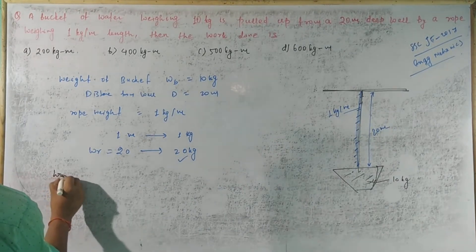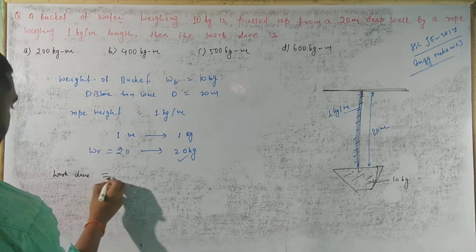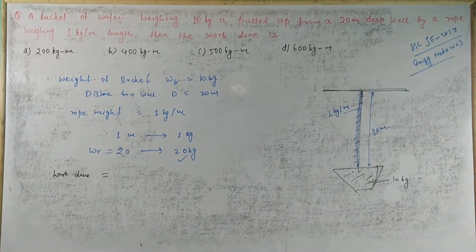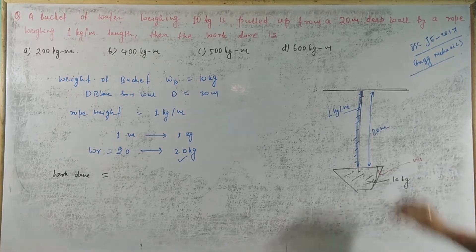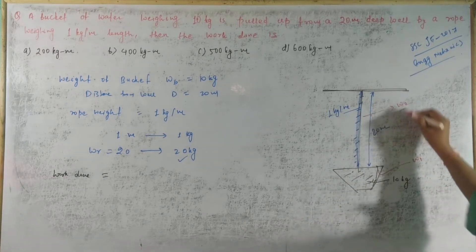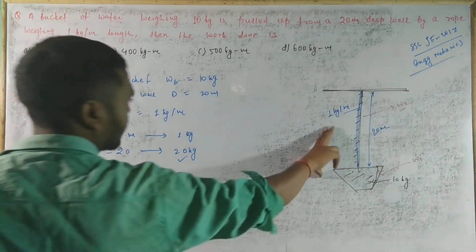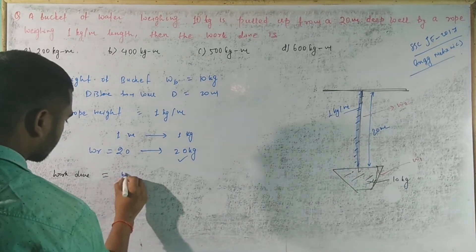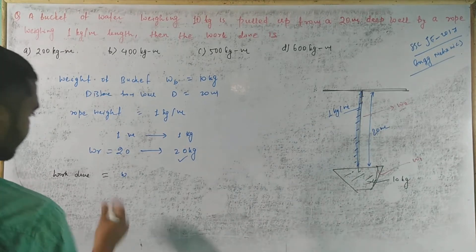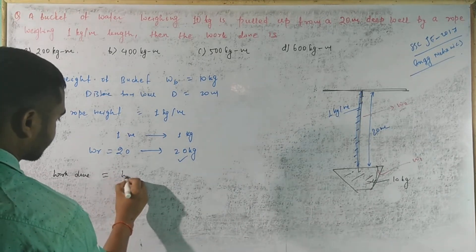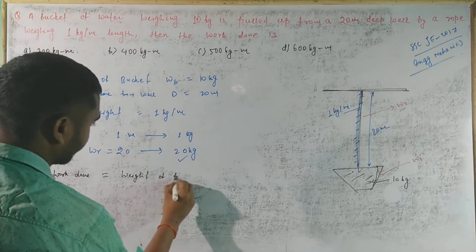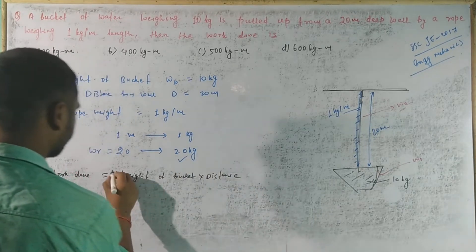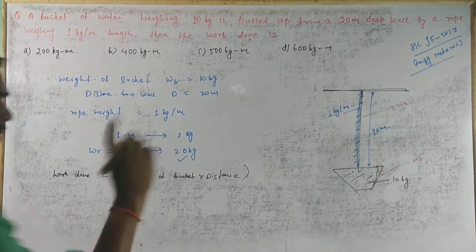अब work done find करते हैं। Work done = यहाँ दो काम हो रहे हैं — एक bucket के द्वारा और एक rope के द्वारा। तो work done = weight of bucket × distance + weight of rope × distance।